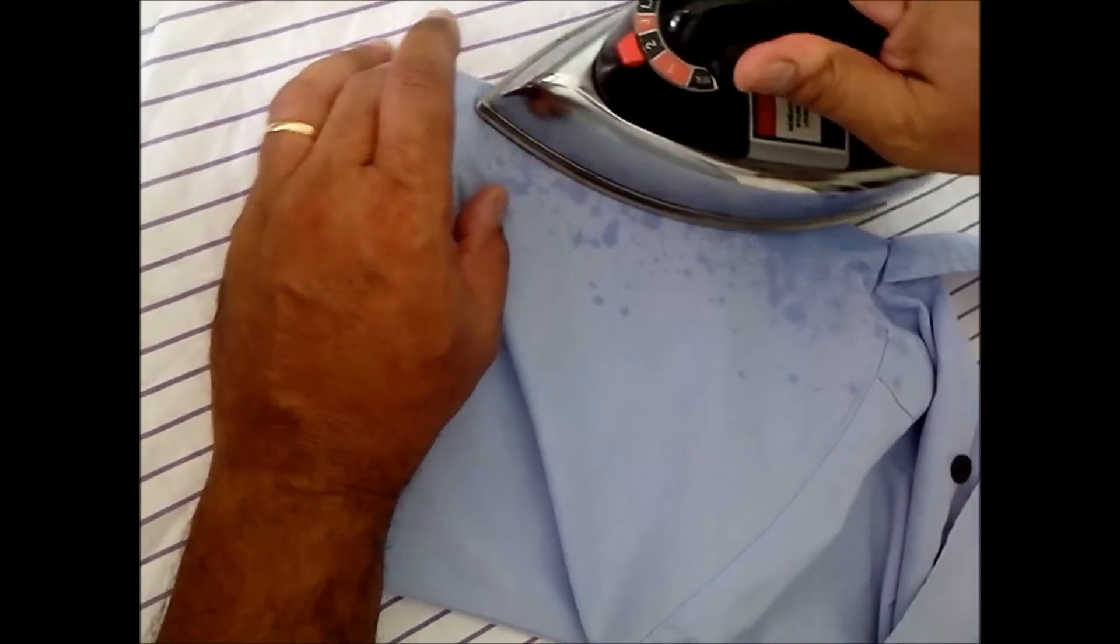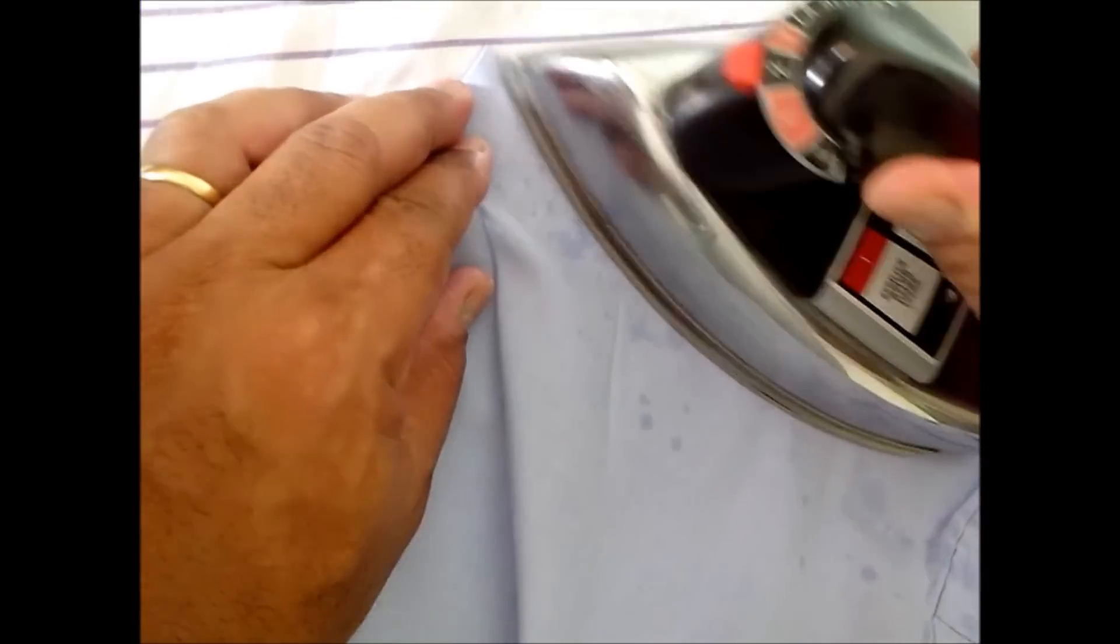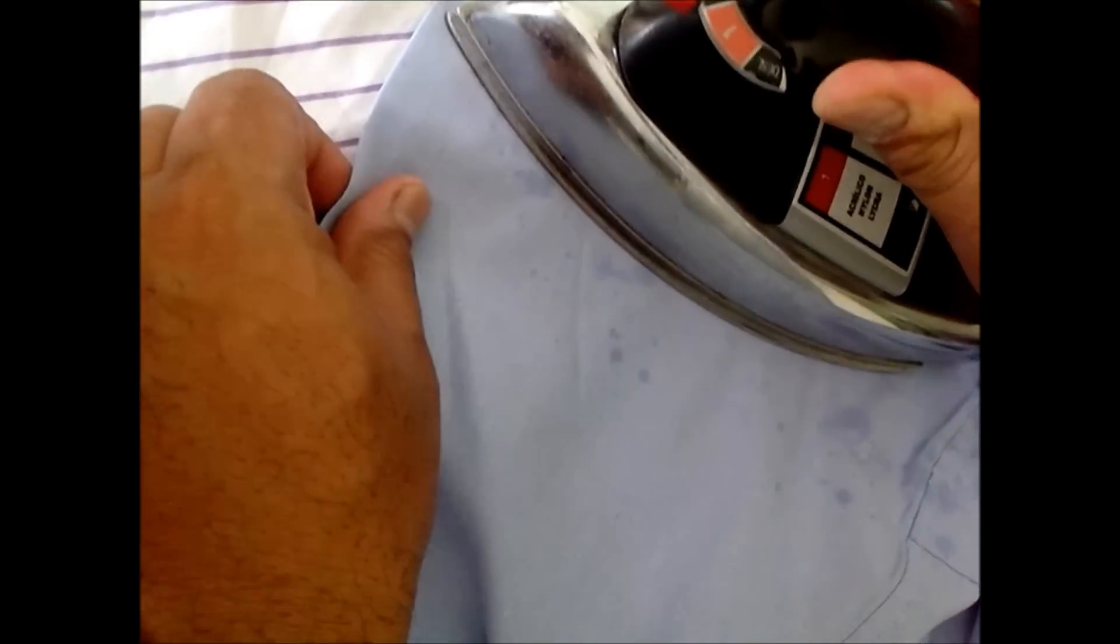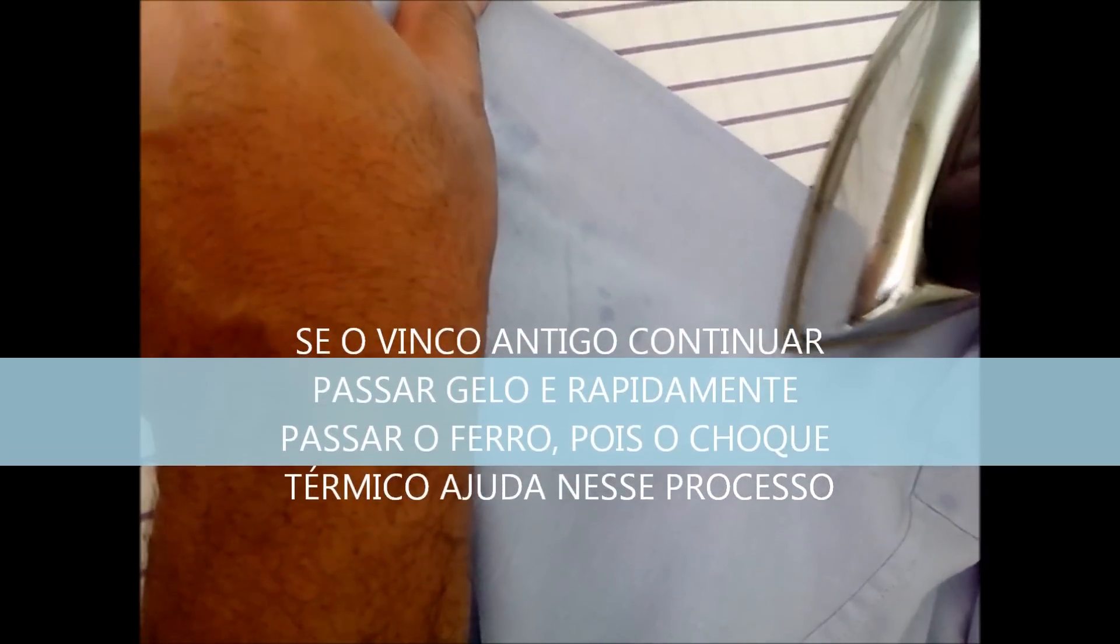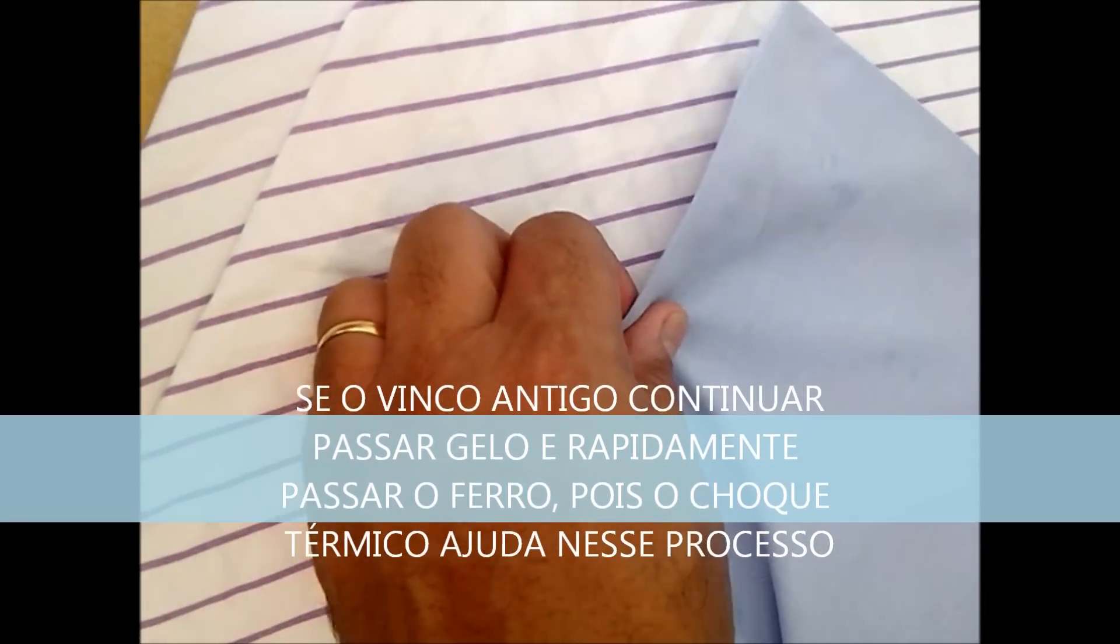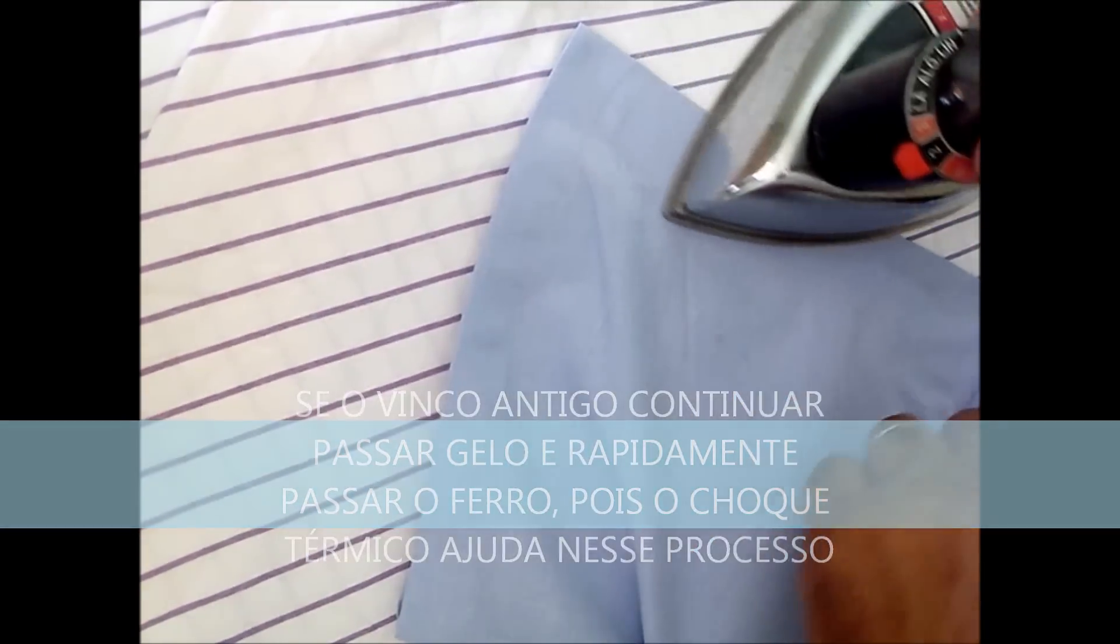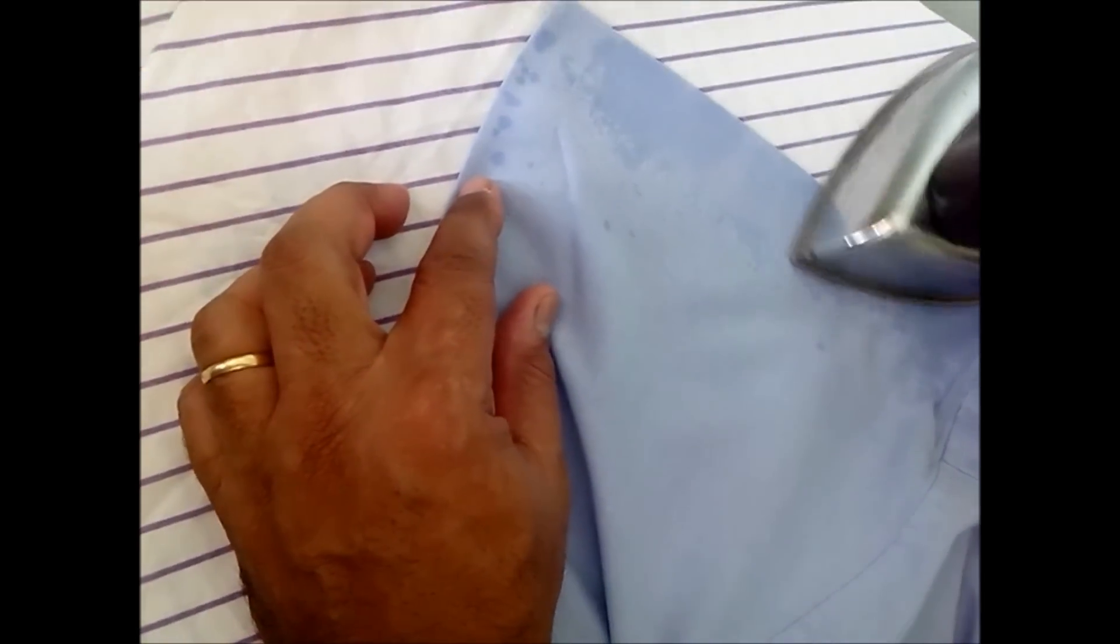E vem com o ferro para acertar o vinco, para retirar o vinco antigo. Ficou ainda a marca do vinco antigo. Você joga um pouquinho mais de água que ele vai sair.